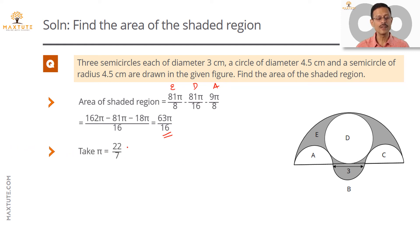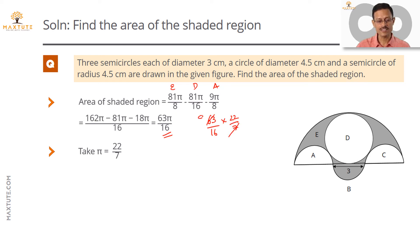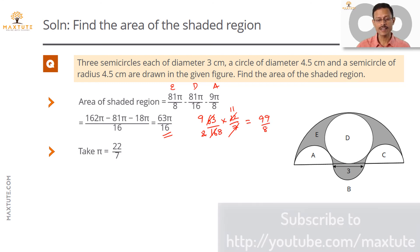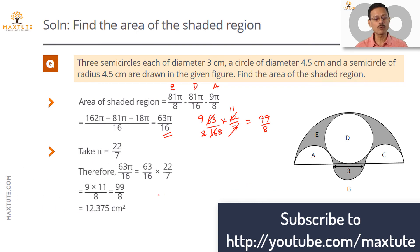Taking π = 22/7, we compute 63/16 × 22/7. The 7 and 63 cancel to give 9, and 9 × 22 = 198, divided by 16 gives 99/8, which is 12.375 square centimeters. This is the required area of the shaded region.